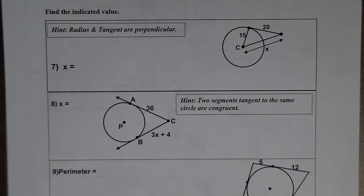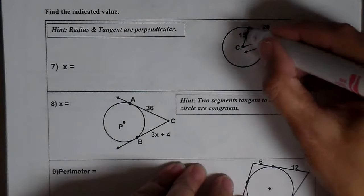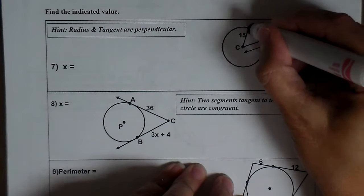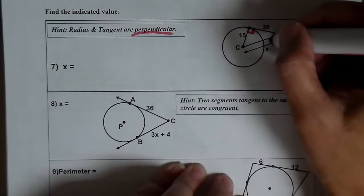Alright, so let's look at circles. In circles, what do we know about the radius and the tangent? If I've got a radius and a tangent that intersect, they're always perpendicular, so that is a right angle.